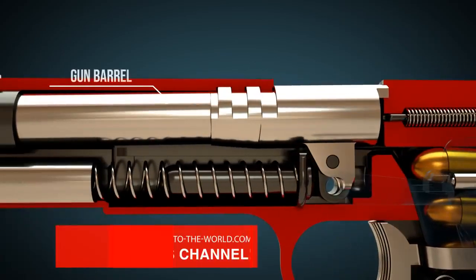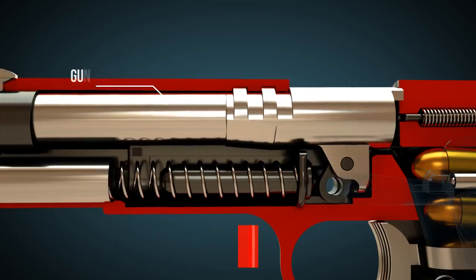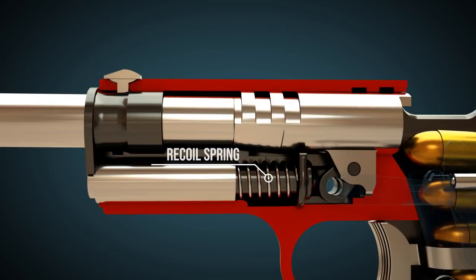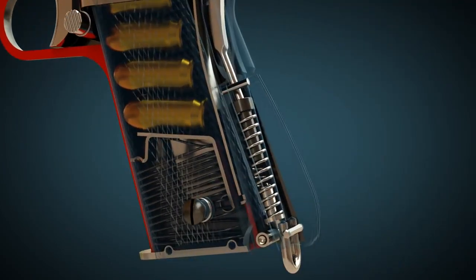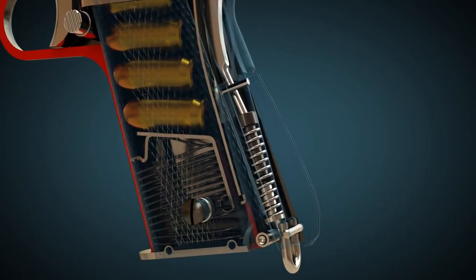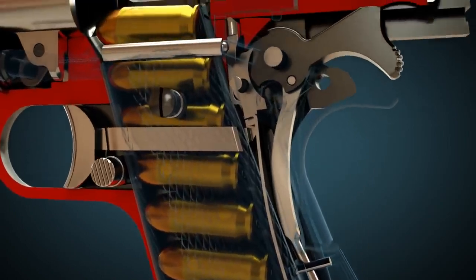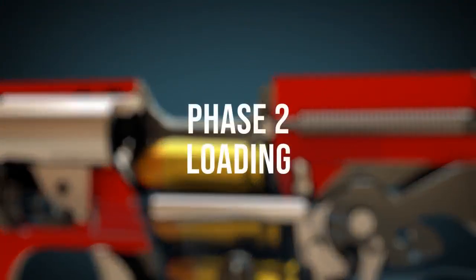When the slide is pushed backwards, it pushes the barrel backwards too. This will allow the cartridge to slide easily into the barrel. The recoil spring is under tension. The hammer is under tension through the hammer strut.